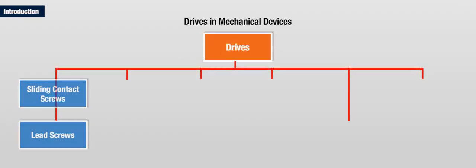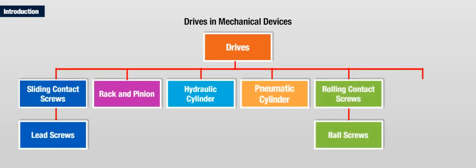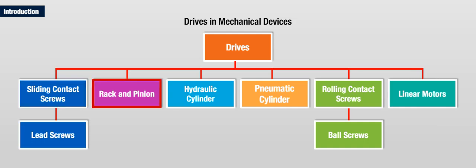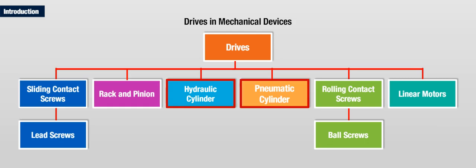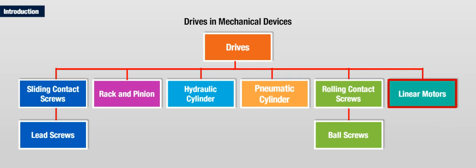We are well aware that in order to generate motion, there have been many types of drives in use for long. The various types of drives used in mechanical devices include lead screws, rack and pinion, hydraulic cylinder, pneumatic cylinder, ball screws and linear motors.